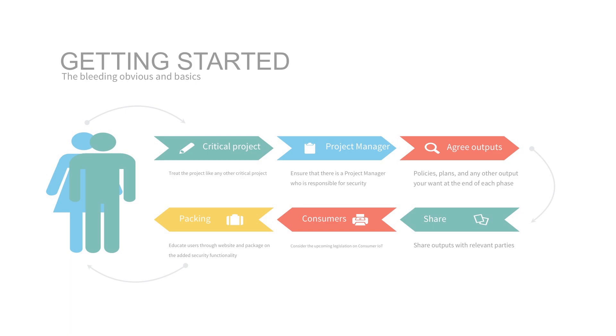Recommendations. There are lots of ways of breaking this down — in our paper we broke it down into about ten ways. For today's purposes, in terms of getting started, what you need to do is treat the project like any other critical project. The way of doing that is to have a proper project manager who has responsibility for security aspects. When we've spoken to building managers and looked at projects when they're starting, quite often they haven't got someone with an overview of security — it is still, in many respects, an afterthought. Agree the outputs, agree policies and plans right at the outset, and monitor throughout the phase.